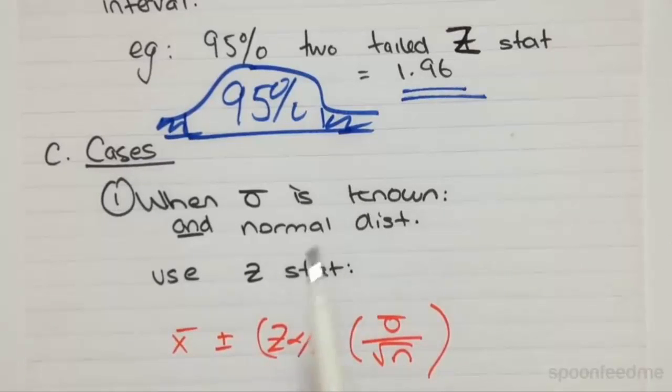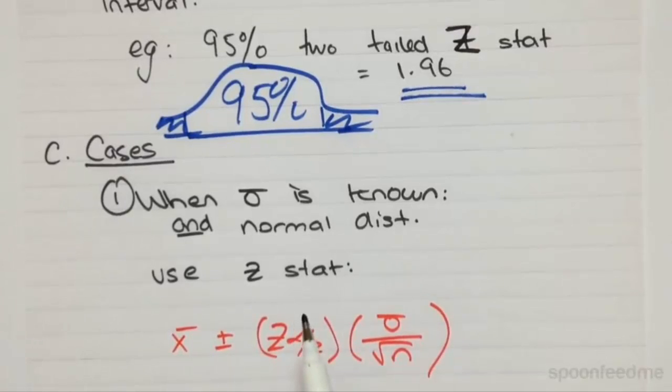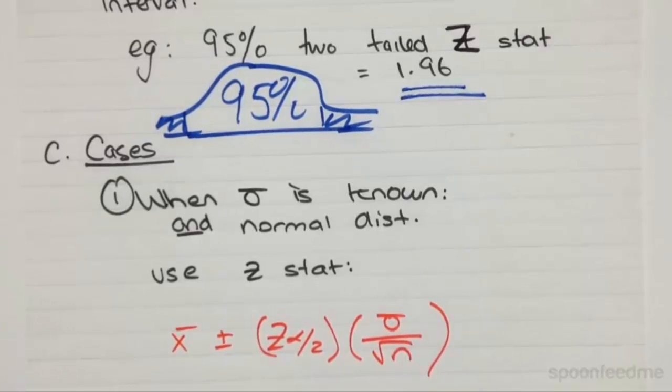So your Z statistic is going to be that, again, that critical value that bounds 95% of the potential values of population means multiplied by the standard deviation of the population divided by the square root of the number of data points in the sample.